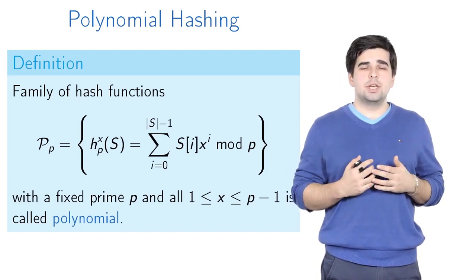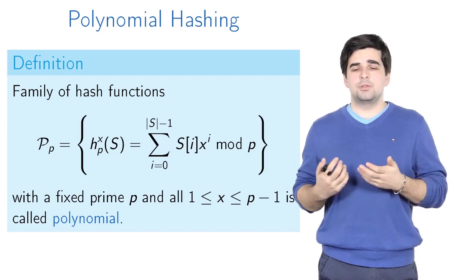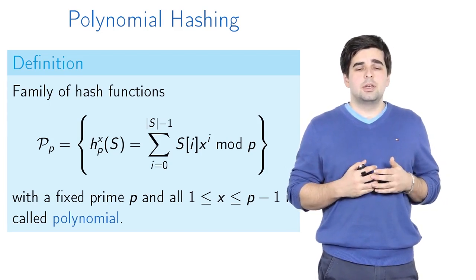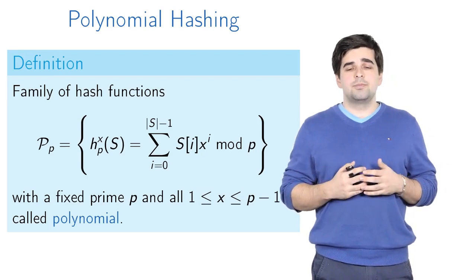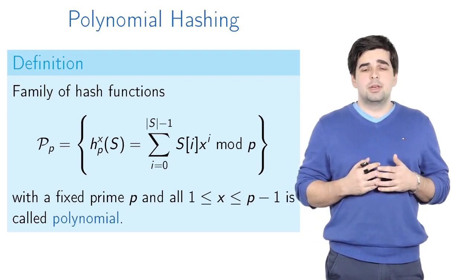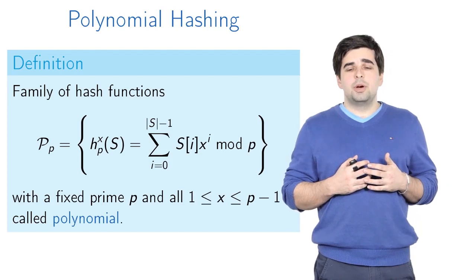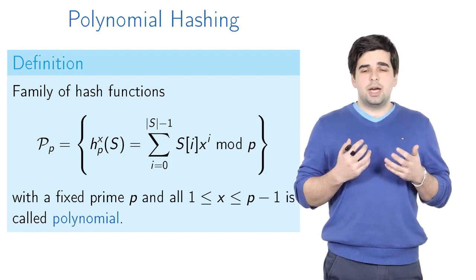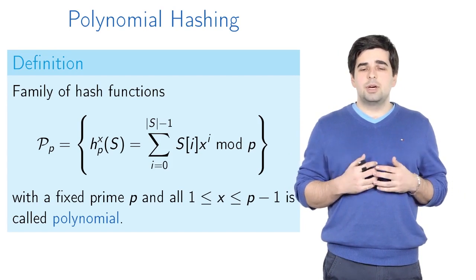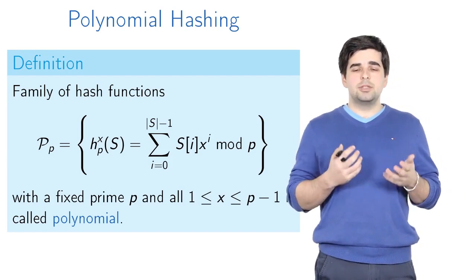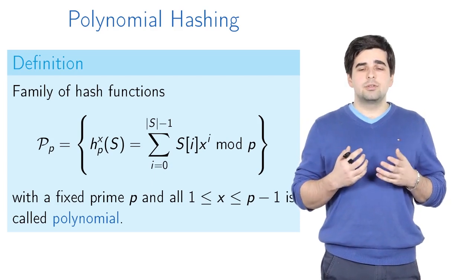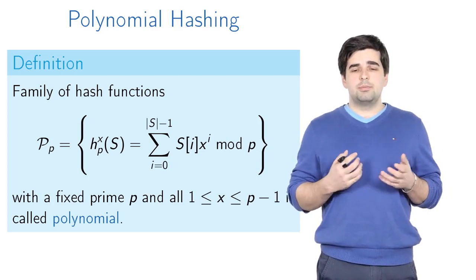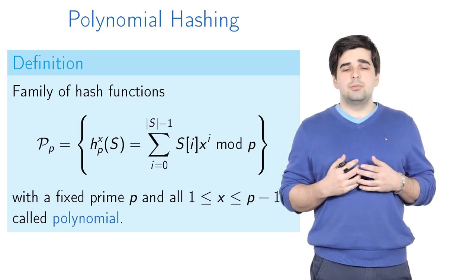x is a parameter which changes from 1 to p-1. The value of a hash function indexed by p and x on a string s is the following sum: it is a polynomial sum where we multiply the integer code corresponding to the ith character of s (denoted by s[i]) by x to the power of i. We sum all these things up and we take the value modulo p.